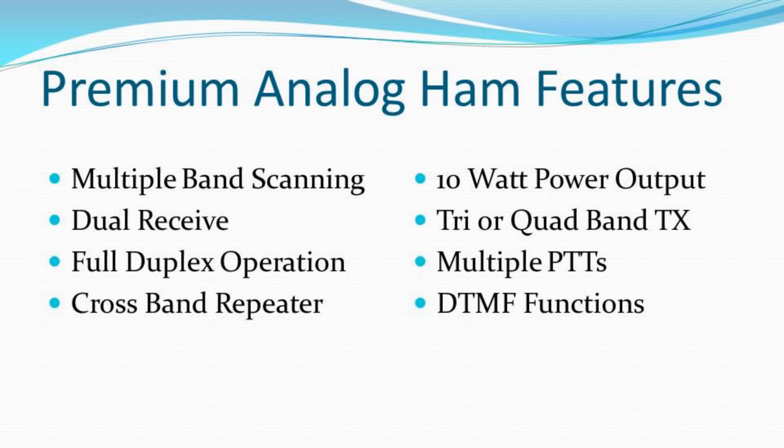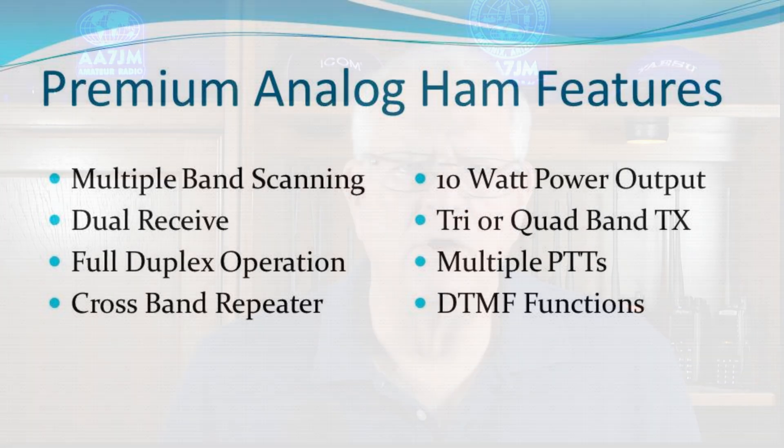Higher-cost ham analog HTs include most of the above features, plus simultaneous multiband frequency scanning, dual receive, full-duplex operation, crossband repeater capabilities, 10-watt power output, tri- or quad-band transmit capabilities, multiple push-to-talk buttons, as well as various DTMF-related functions including group call and radio stun and kill commands. Ham HTs in this category range in price from the upper $80 range to about $220 for the ham version of the Wouxun KG-Q10.